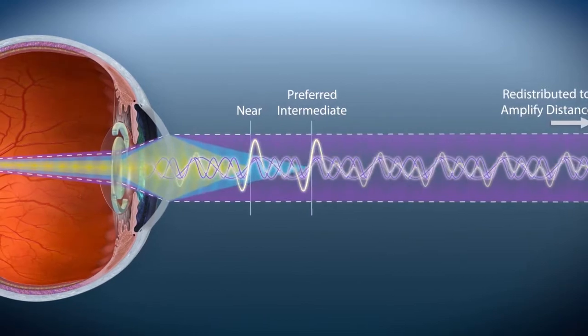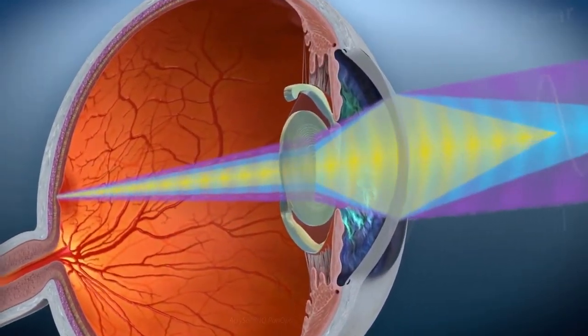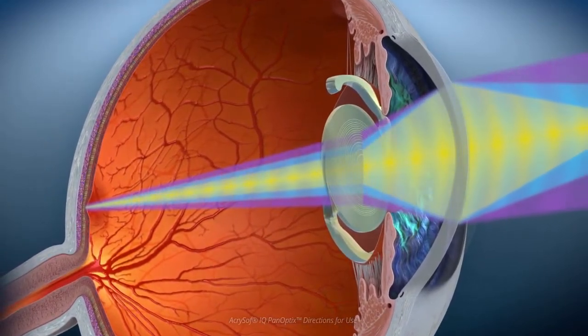This design allows the Acrysoft IQ Panoptix IOL to transmit 88% of light to the retina for exceptionally high light utilization in a presbyopia correcting IOL.